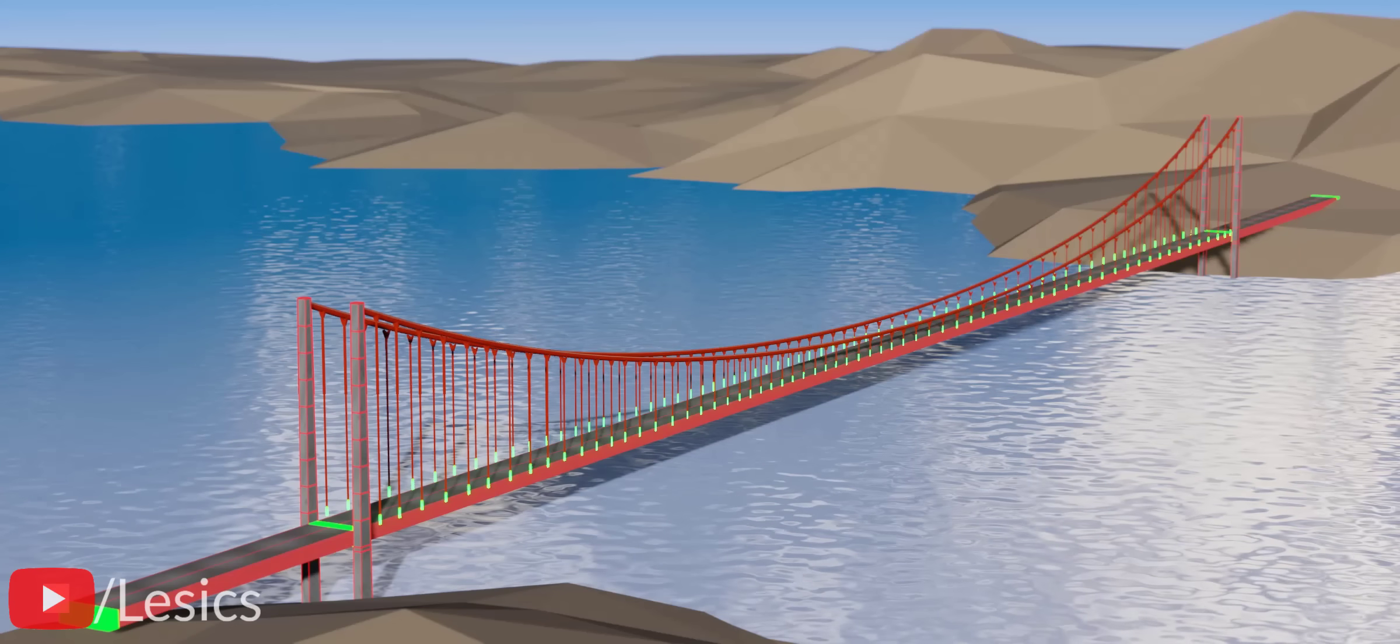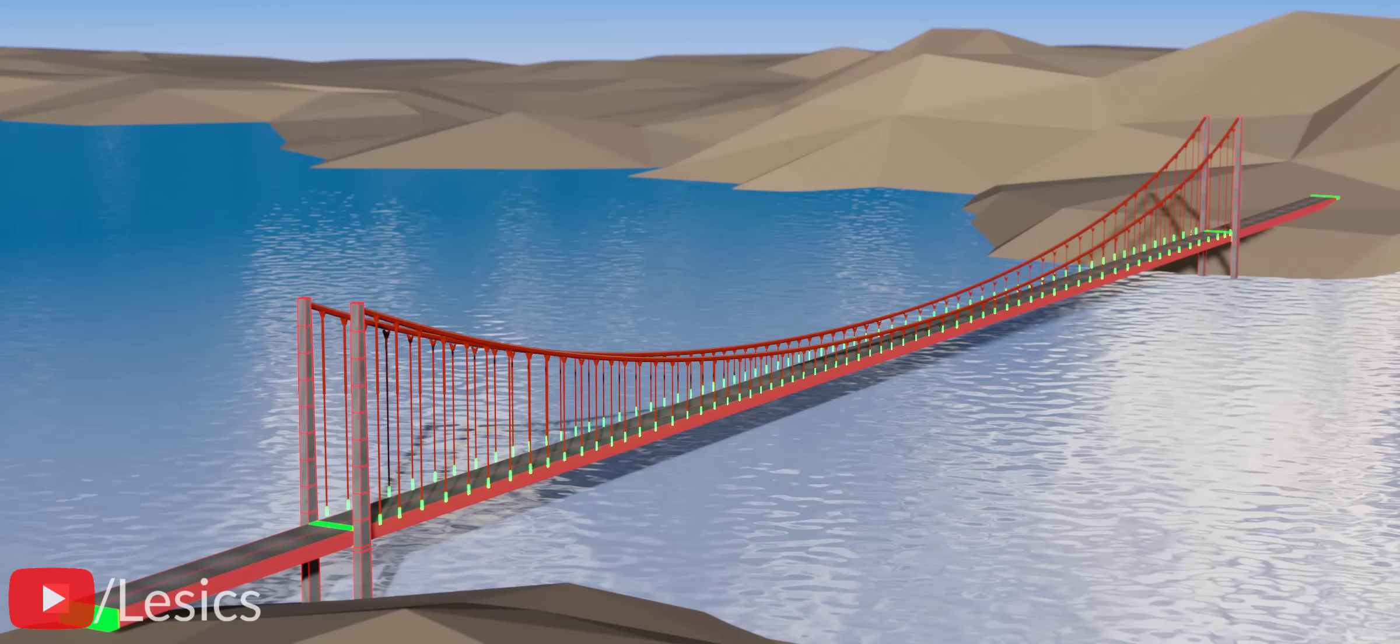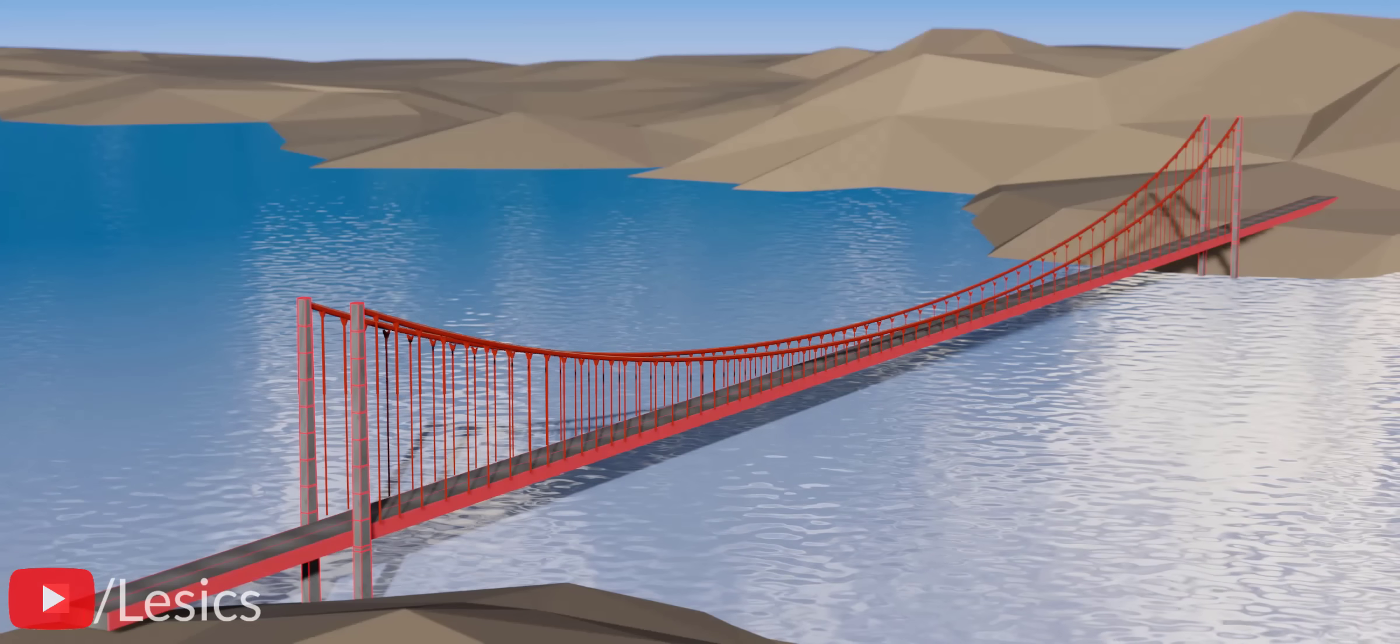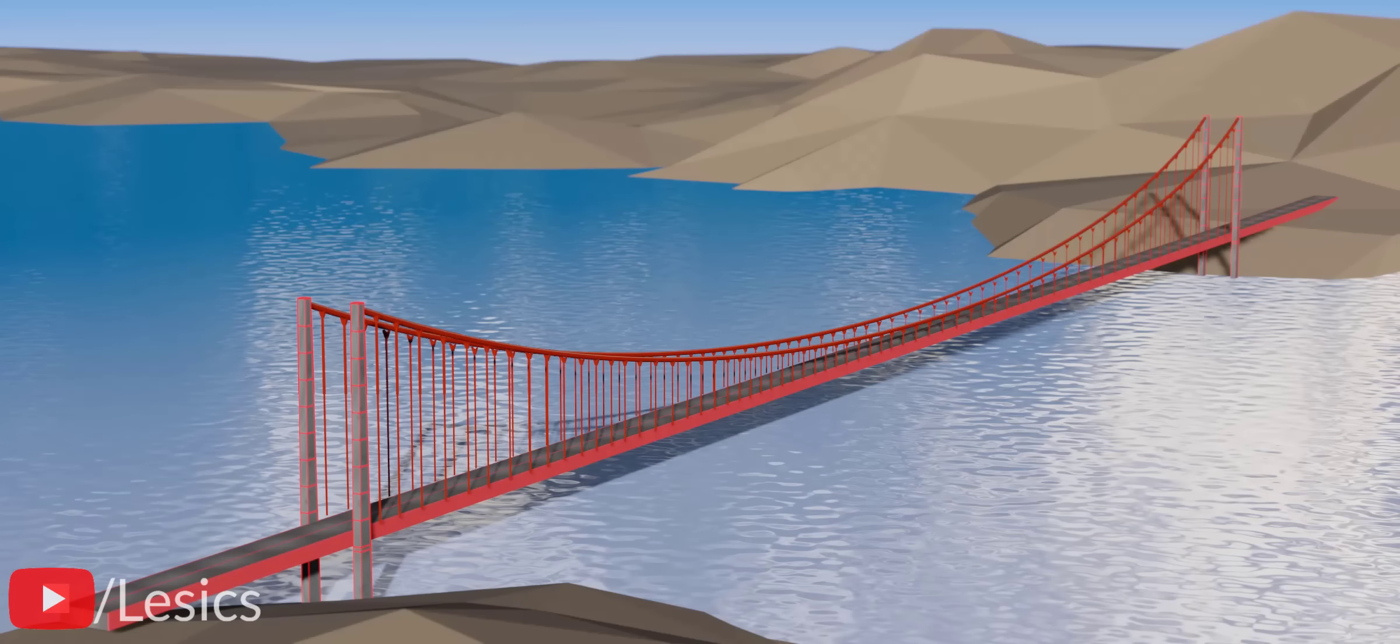This is the basic design behind the suspension bridge. Before exploring more about the Golden Gate Bridge, let's first understand why the engineers chose a suspension design for this site.